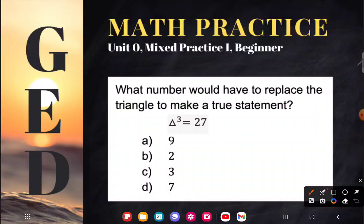So let's just go ahead, read it. It says what number would have to replace the triangle to make a true statement? Okay, so what do I want to do? I want to put a number here where the triangle was in order to make something true. So just what I'm saying here is that there is a number that if I raise it to the third power is equal to 27.